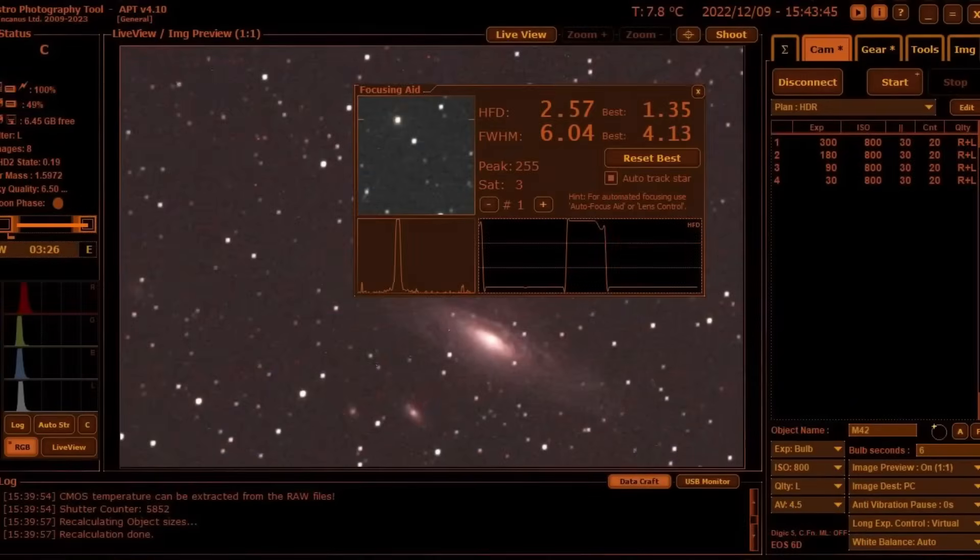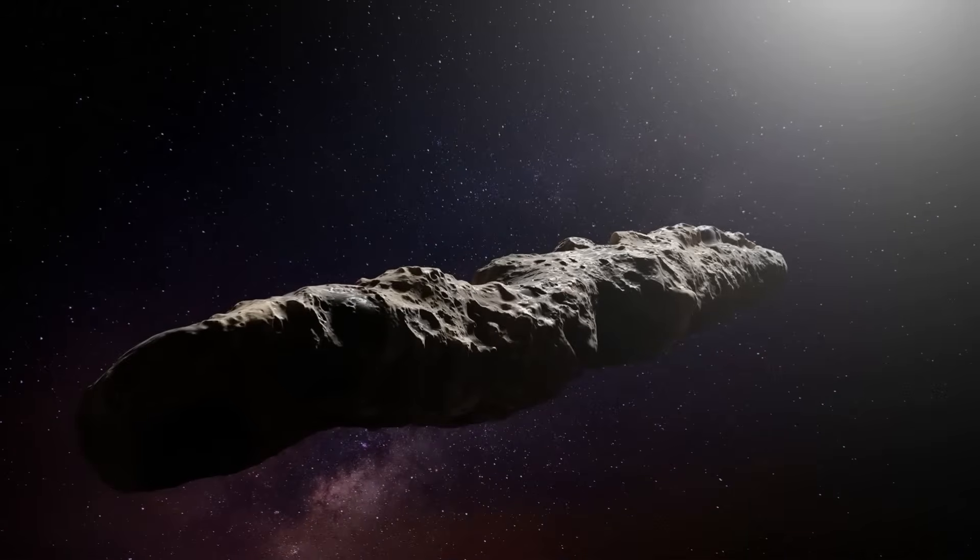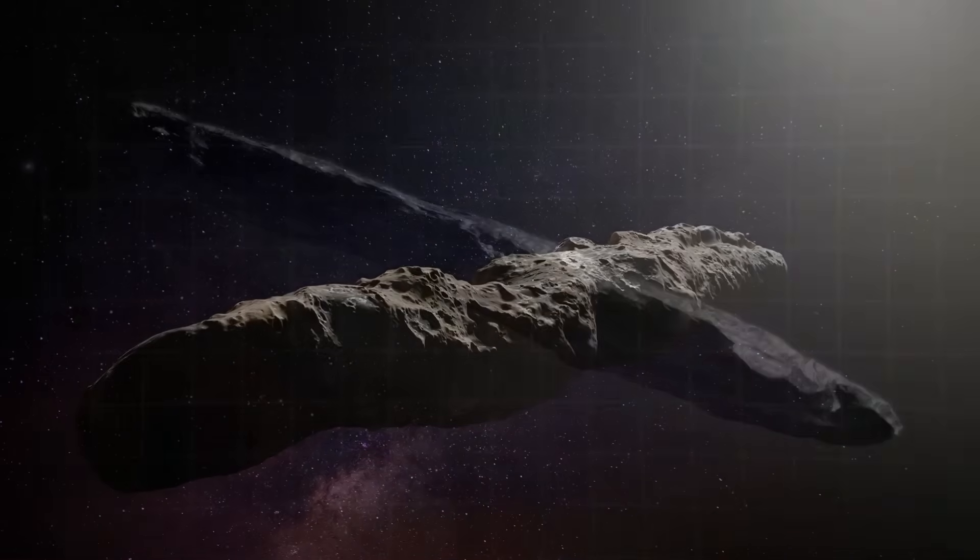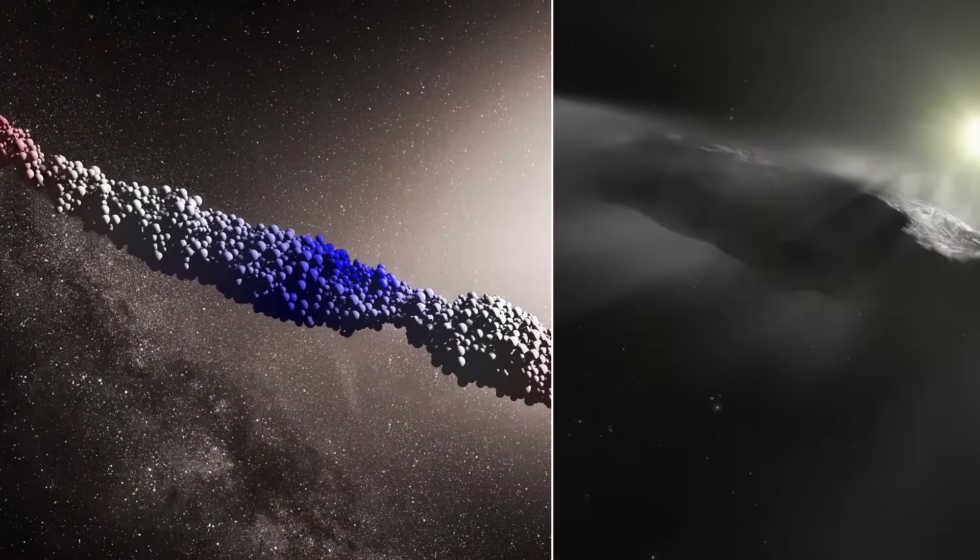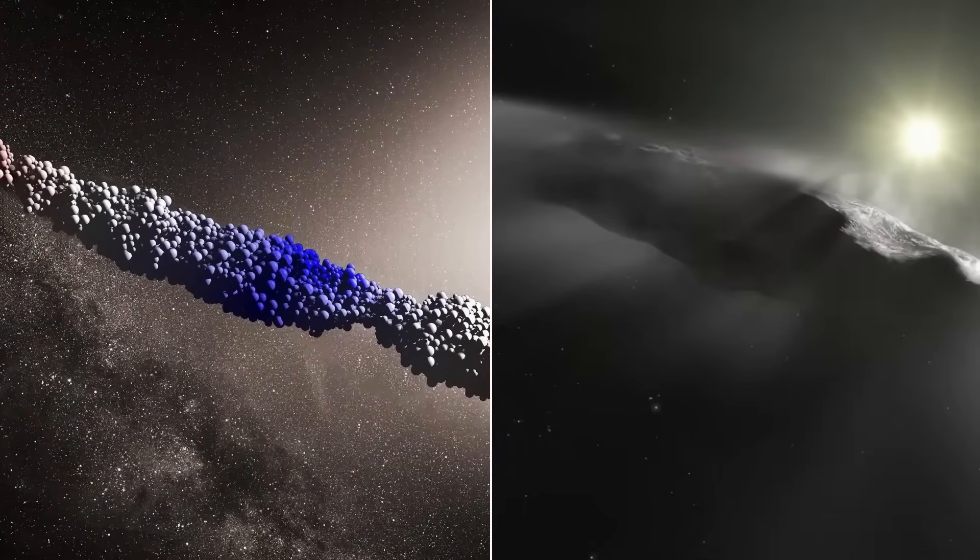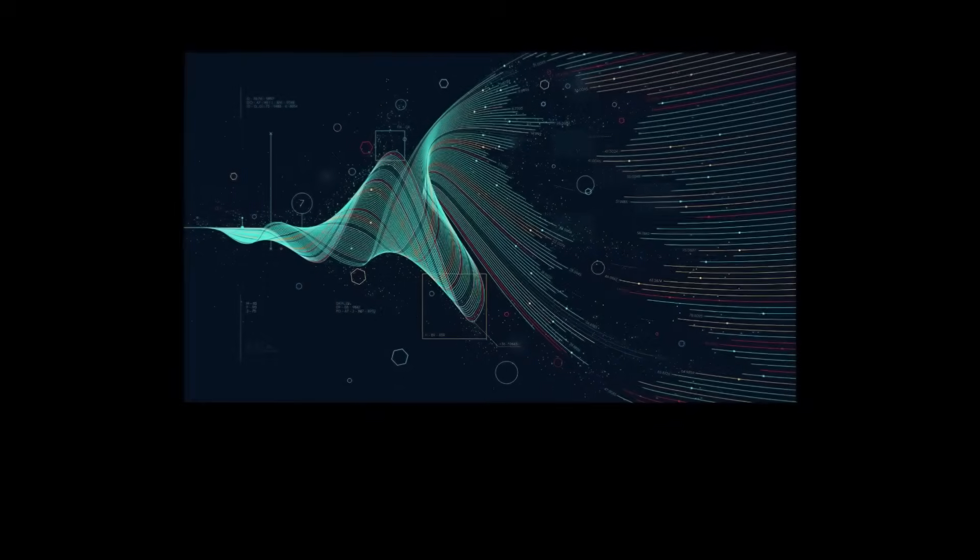3i Atlas has stunned astronomers with an extraordinary surge in brightness. In just four weeks, it grew five times brighter than predicted by standard cometary models. At its distance, over six astronomical units from the Sun, this kind of activity shouldn't even be possible.